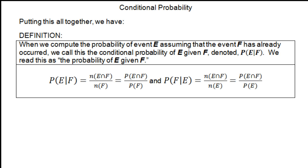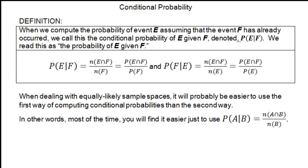Collecting everything together: I think when you're dealing with equally likely sample spaces, it's probably going to be easier to use the first way — counting elements in the intersection over the number in whichever event is appropriate. But there will be uses for the probability-ratio formula, especially in another guise we'll discuss shortly.